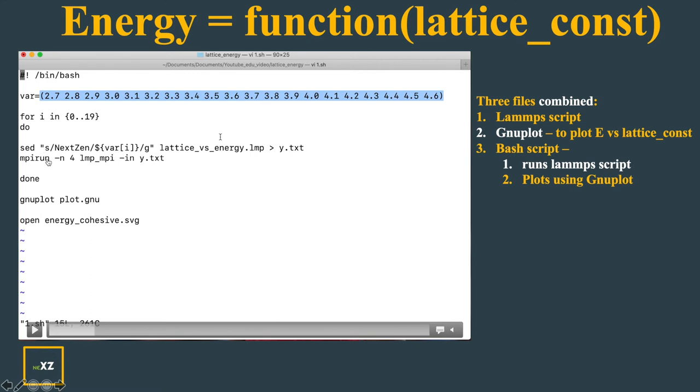You have to use s slash nextzen slash dollar sign in flower brackets you put variable and then you give slash g then you give the text file where you want to find and replace and you output that into another file. That is the file here. I am running with LAMMPS. After I run with LAMMPS for many times, I do the gnuplot plot.gnu and in the plot.gnu, I have exported my plot into SVG format. I also installed gaplin. The gaplin software opens the svg type format.